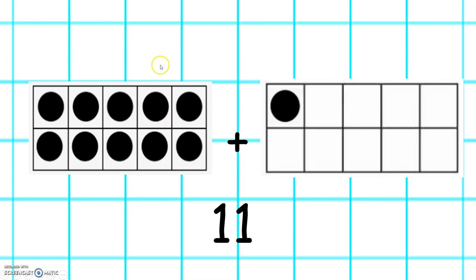Here we have 10, 11. So we know there are 10 in this tens frame and we count on 1 which gives us 11.